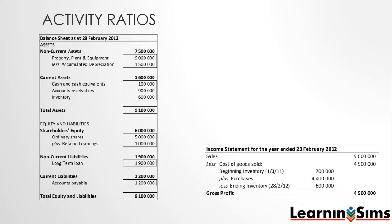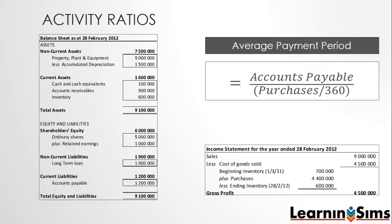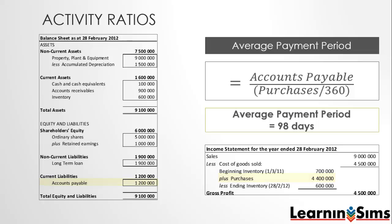The last activity ratio we will look at is the average payment period. It measures the average amount of time in days needed to pay creditors. It is calculated by dividing accounts payable with their average purchases per day. In our example, we have accounts payable of 1.2 million divided by the purchases of 4.4 million divided by 360, giving us 98 days.